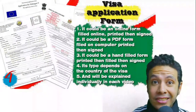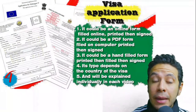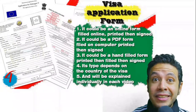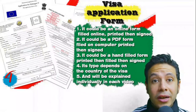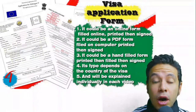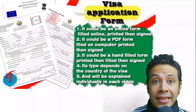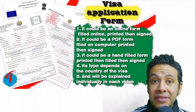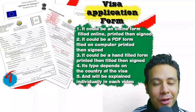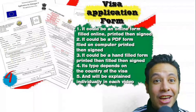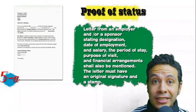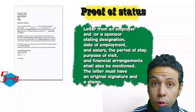For the visa application form, in general you need only one copy, but sometimes two or three copies are required. Forms differ from country to country — generally you print and fill it manually, but many countries now provide an online platform where you fill it online, then print and sign it. For this application form, you just fill it as we do in the video.